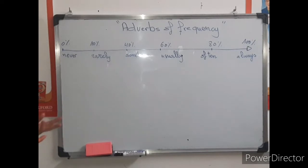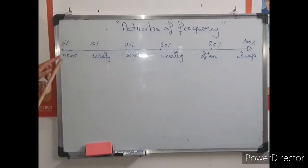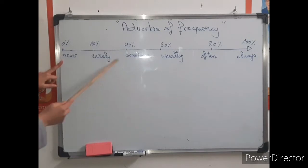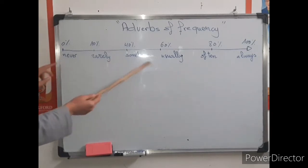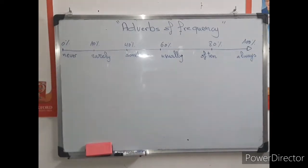What are the adverbs of frequency? Here are adverbs of frequency. We have six words which are: never, rarely, sometimes, usually, often, and always. So six adverbs — we call them adverbs of frequency.